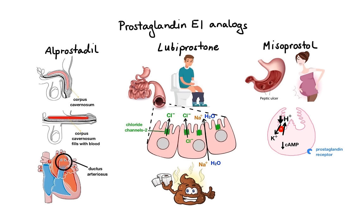Furthermore, misoprostol protects the stomach lining by increasing bicarbonate and mucus production. Lastly, by interacting with prostaglandin receptors in the uterus, misoprostol causes softening of the cervix and uterine contractions, leading to the expulsion of the uterine contents.